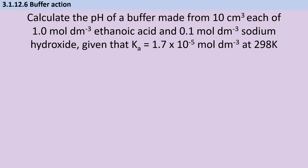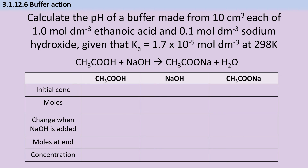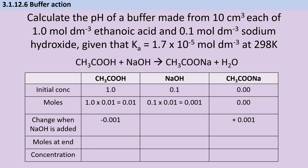If you're given an acid and then a strong base, think of it as an equilibrium question and use an ICE table. Start with your initial concentrations and number of moles. When you add the base, the concentration of the salt will increase by the same number of moles as the base added, and the acid will decrease by that same number of moles. Work out the moles at the end and calculate new concentrations of each, then proceed exactly as in the previous example.